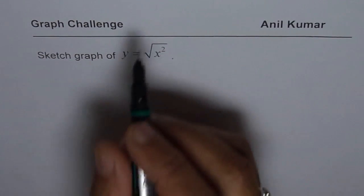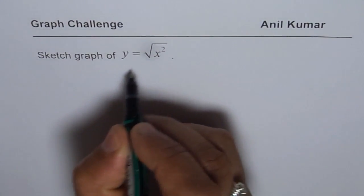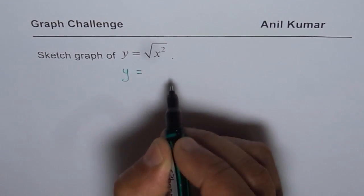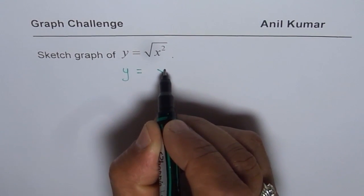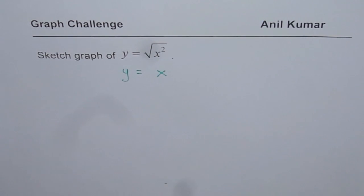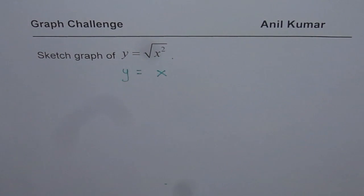Many times I have seen students writing y equals to square root of x squared as equal to y equals to x since they think that square and then square root are reversing the operations and so what you get is x which of course is a wrong answer.